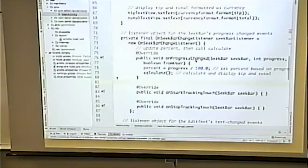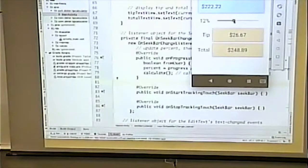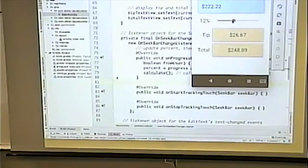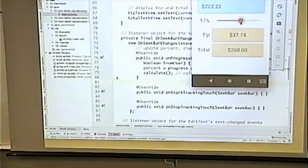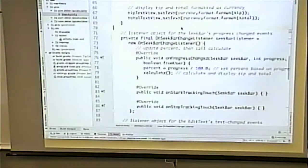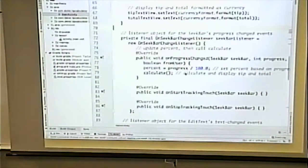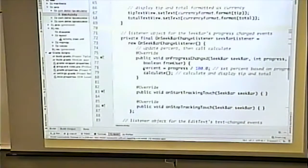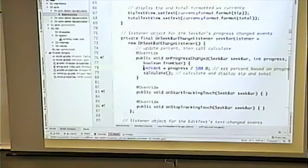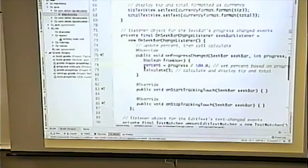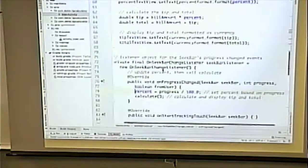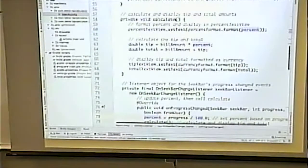But what we're interested in is when the progress has changed. In other words, as if we slide it on. If I click on it, it doesn't really matter. But if I've slid this to a different number, that's when the code executes. And notice what it does. It sets a variable. And then it calls the calculate method. That's a method up here.